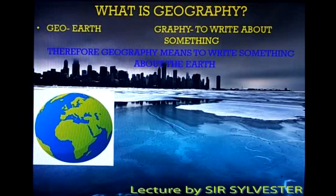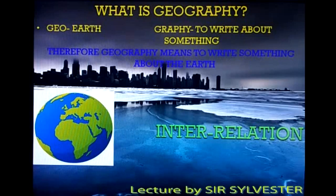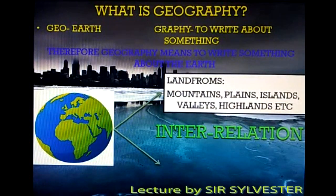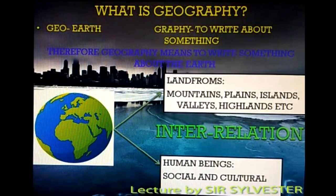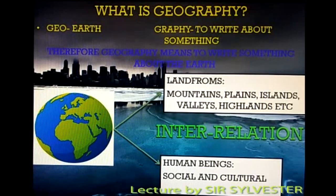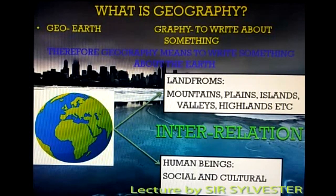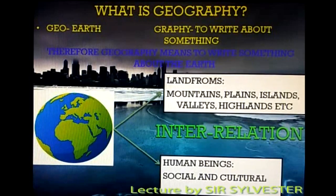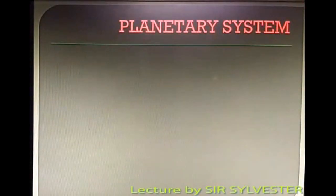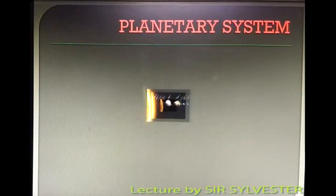If you have a look at our planet Earth, there is an interrelationship between two things. First being the landforms that we see, and the next is the human beings. Landforms means the mountains, the plains, islands, valleys, highlands, etc. Human beings comprise of both social as well as cultural beings.